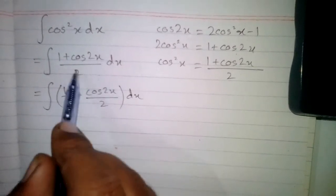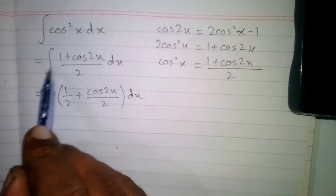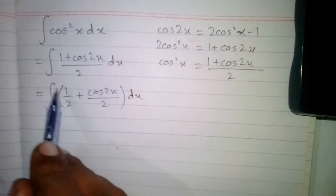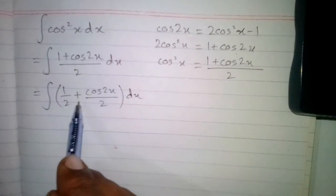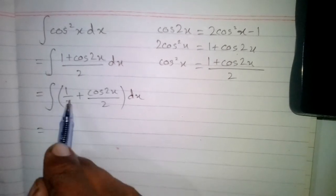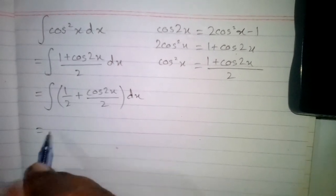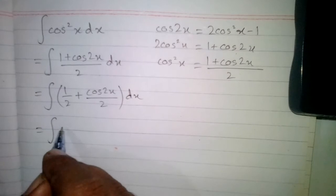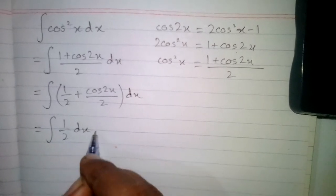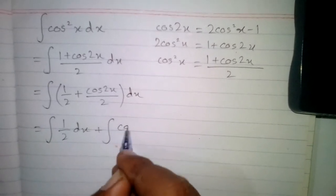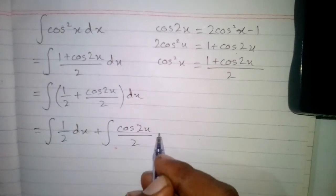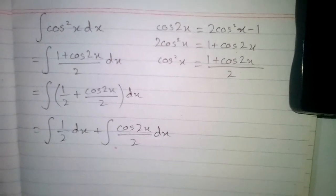The integral of 1 plus cos 2x upon 2 with respect to x becomes the integral of one half plus cos 2x upon 2. Applying the integral to both terms separately, we have one half integral of 1 dx plus integral of cos 2x upon 2 dx.